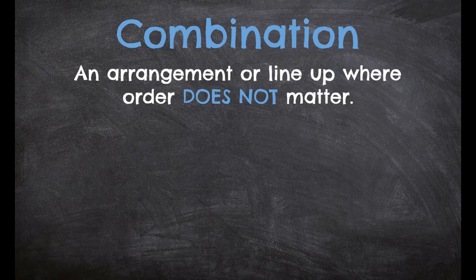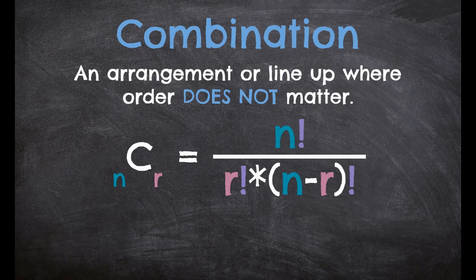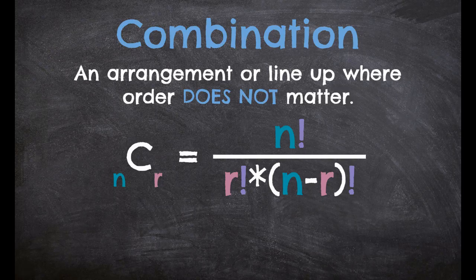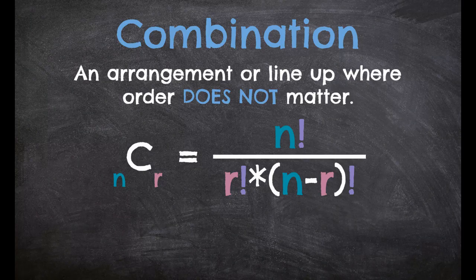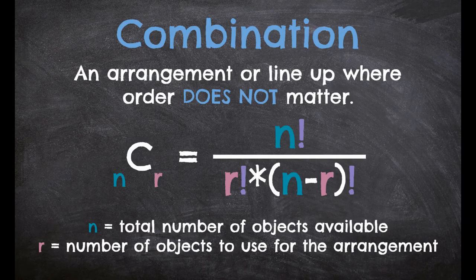Combinations — the order does not matter. The formula we're going to use looks very complicated, but it's fairly simple once you get the hang of it. We take n factorial and divide it by r factorial times (n minus r) factorial. n is our total number of objects available, and r is how many of them we want to use for the arrangement. And just like with factorials, there is a way to do this using a graphing calculator.